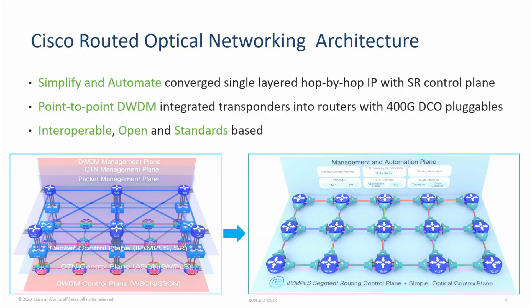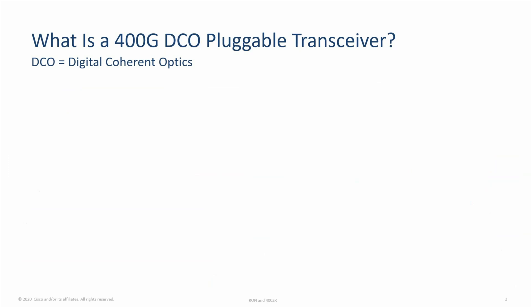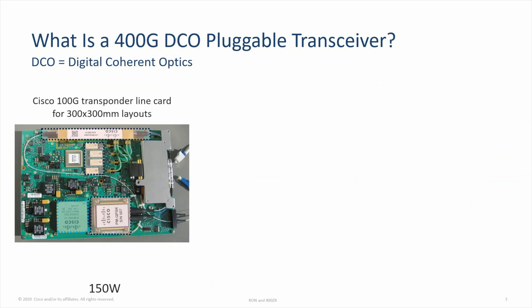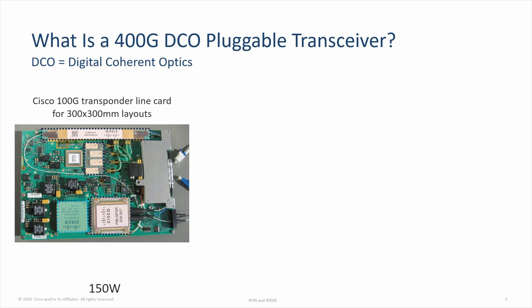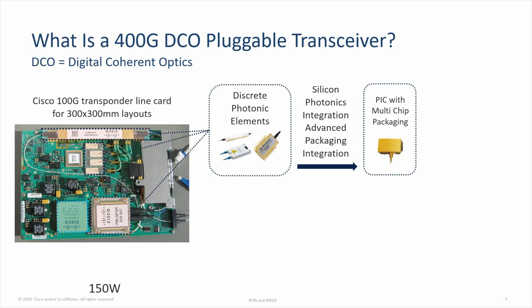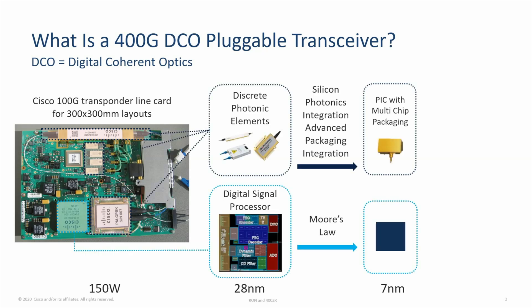The key objective of the DCO design is to be open and standards-based, so with multi-vendor interoperability. DCO stands for Digital Coherent Optics. It integrates a transponder into the router for simplification and cost optimization. In the first generation of 100GB DCO, it was the size of a full line card with very high power consumption. With advances in technologies such as silicon photonics and high-performance DSP with 7nm processors, we are able to integrate a 400GB DCO into a QSFP-DD pluggable form factor with very low power.